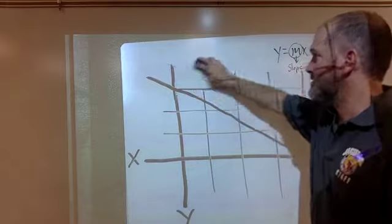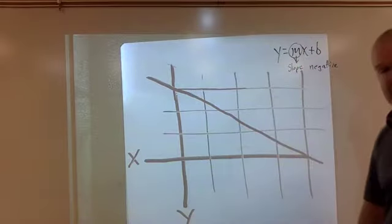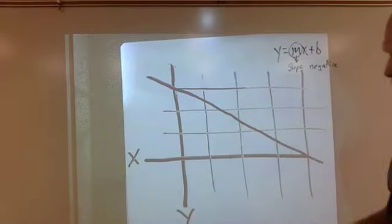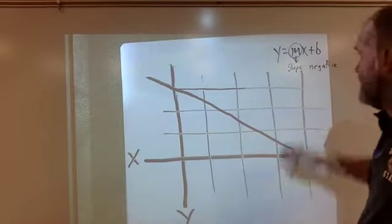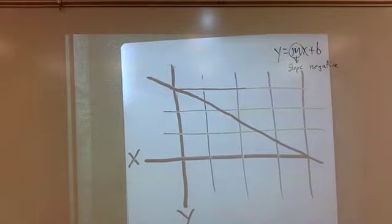Once you have it narrowed down to two or three choices, then you can start looking at the numbers. All right, there's another way to eliminate choices too. And it's not just with M, it's with B, your Y-intercept.